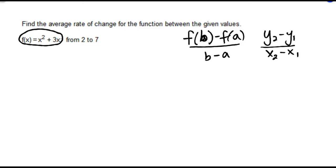In our example, we're going to let a = 2 and b = 7. And we need to calculate f(b) and f(a) in order to apply this average rate of change formula.